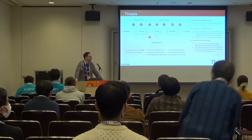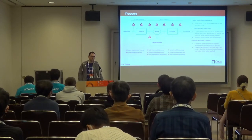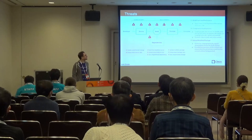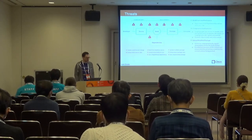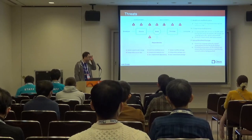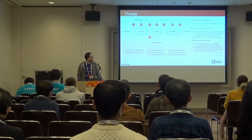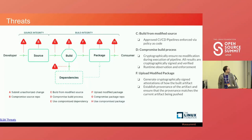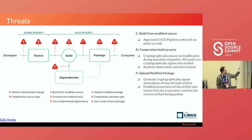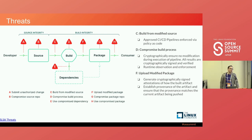Let's first talk about the threats we're trying to protect against with a tool like Fresca. This diagram comes from the SALSA website. The main focus of a tool like Fresca, which is a build-related tool, is mostly around the area between C and F on that diagram. The main things we're worried about are things like what happened to SolarWinds, and pulling in bad dependencies.